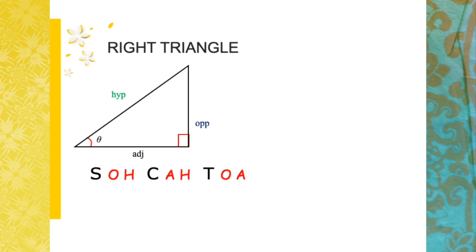The trigonometric functions based on the right triangle — the trigonometric ratios — are sine, cosine, and tangent, and their inverses. To remember them easily, we use the mnemonic SOH-CAH-TOA.